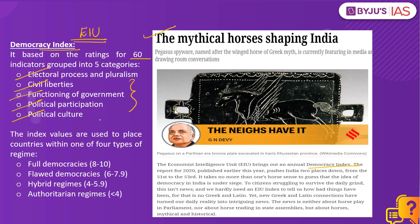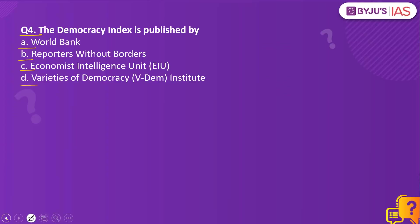Countries are scored on a scale of 10 and placed into one of four categories based on their scores. India is categorized as a flawed democracy in the 2020 index. India's score was 6.61 in 2020, and the highest India has scored was 7.92 in 2014. India's ranking on the Democracy Index is 53 in 2020, two spots lower than 51 in 2019. The answer is: the Democracy Index is published by the Economist Intelligence Unit.